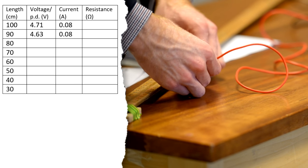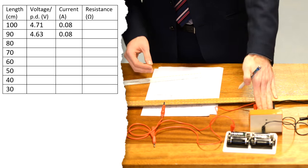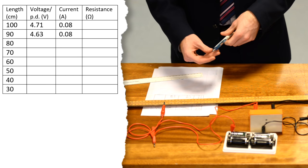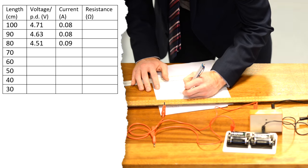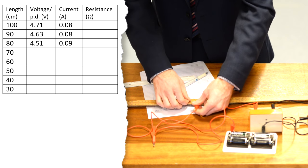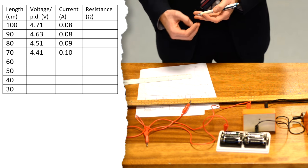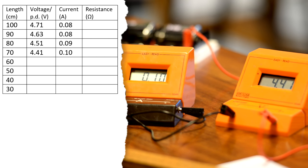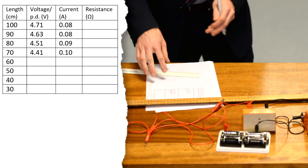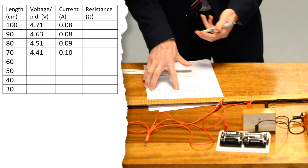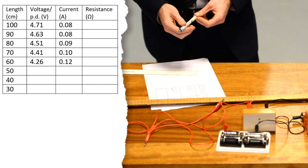Really simple now just sliding the crocodile clip along. At 80 centimeters the voltage reading now drops again to 4.51 volts and the ammeter reading has risen to 0.09 amps. Slide the crocodile clip along again to 70 centimeters, the voltmeter reading now has dropped again to 4.41 volts, the ammeter reading has risen to 0.01 amps. Move along to 60 centimeters and we get a current of 0.12 amps and a voltage of 4.26 volts.